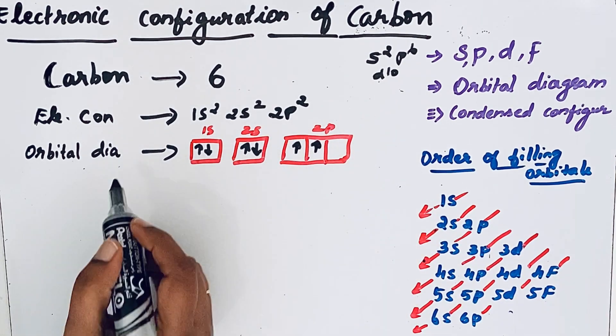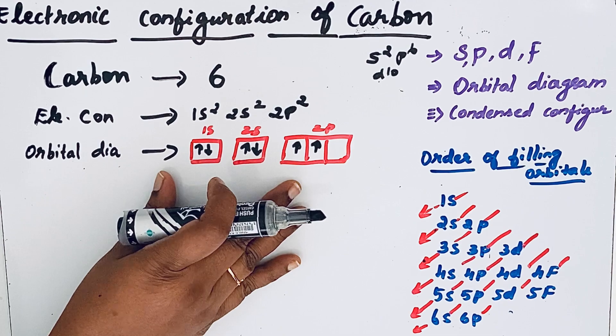2 only with positive spin. This is the orbital diagram for carbon.